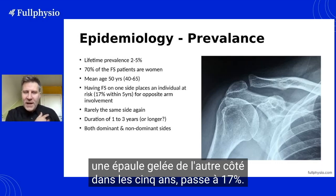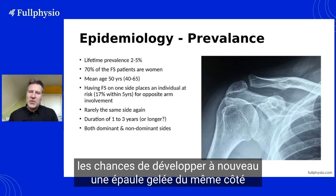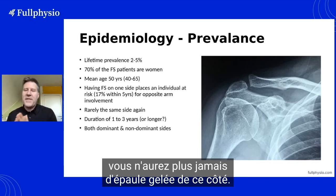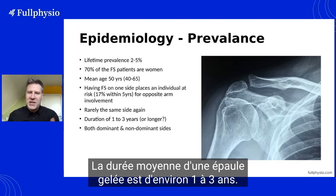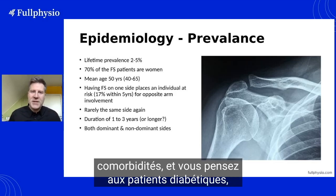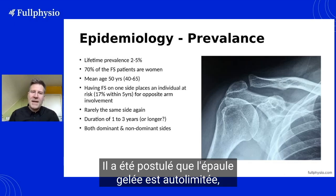If you have a frozen shoulder, the chance of developing a frozen shoulder on the other side within five years rises up to 17 percent. Mysteriously, if you had a frozen shoulder, the chances of developing a frozen shoulder again on the same side are actually close to zero — so if you have a frozen shoulder once, you will never have it again on that same side. Frozen shoulder has an average disease duration of about one to three years, but in patients with comorbidities, particularly diabetes, it will be closer to three years or even longer.